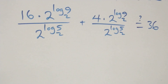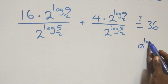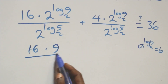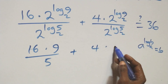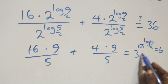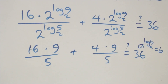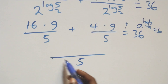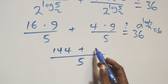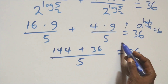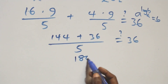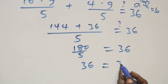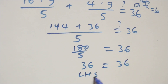This follows from the rule: A raised to power log B to base A equals B. Here we have 16 times 9 over 5 plus 4 times 9 over 5 equals 36. Bringing over the common denominator of 5: 144 plus 36 over 5 equals 36. That gives 180 over 5 equals 36. And of course 180 over 5 gives us 36, which equals 36. Left-hand side equals right-hand side.